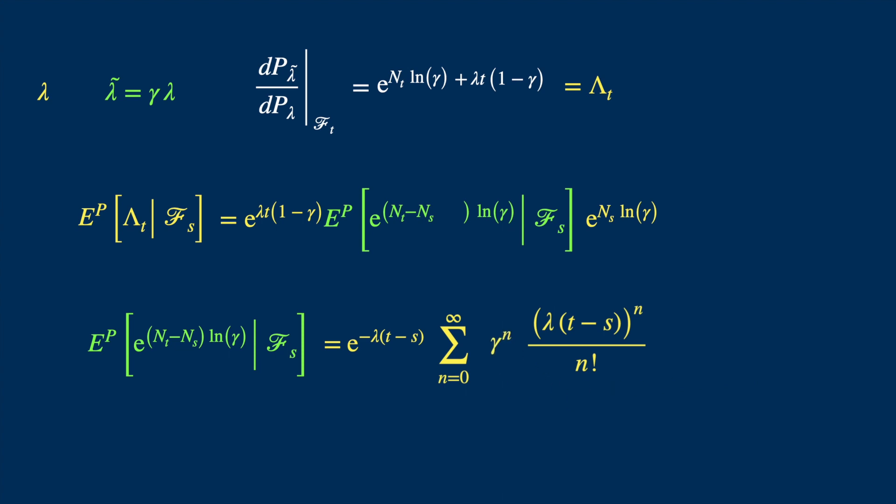Now the first term stays as it is, and this summation is really the series representation of the exponential of something. Remember that e to the power x is this series representation. So here we have a longer expression in place of x, but it's the same series. And thus our equation simplifies.